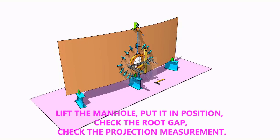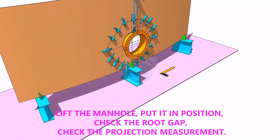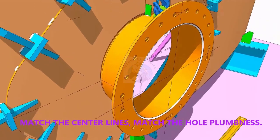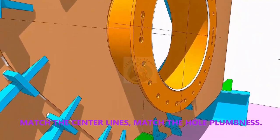Put the manhole in its position. Correct the plumbness. Correct the projection of the manhole. Correct the gap. Check again the plumbness.